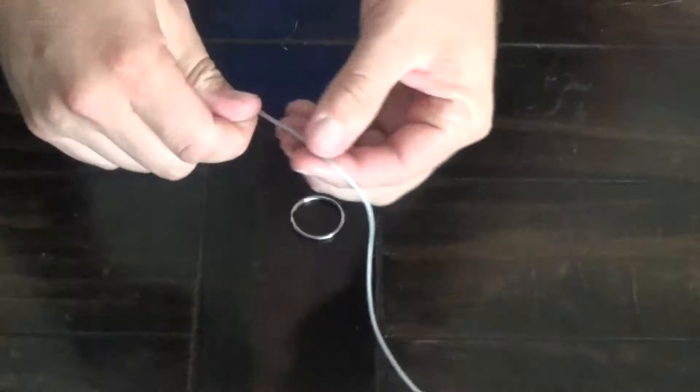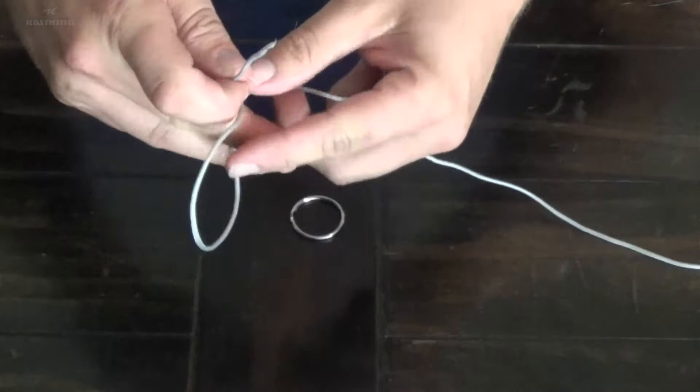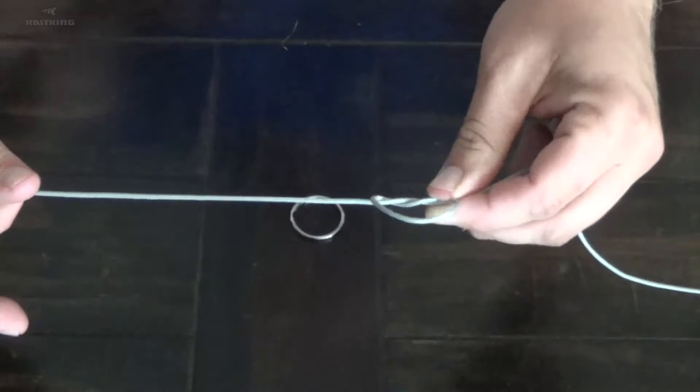So take your main line and you're gonna make one simple overhand knot about eight to ten inches up on your line. Don't cinch this down all the way. You want to leave it open like this.